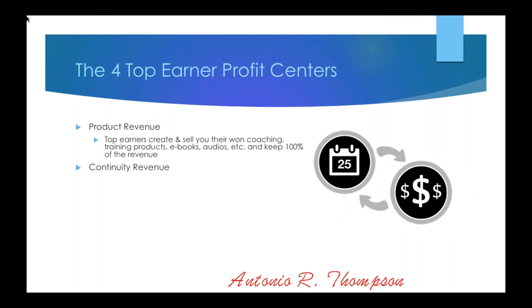The second profit center is continuity revenue — anything that pays you each and every month like clockwork. A good example would be MLSP itself. When you decide to join MLSP Mastery tonight and become an affiliate with just a couple clicks of a button, at no additional cost, MLSP pays you $100 per month per member that you refer to the MLSP Mastery program. For me in my particular network marketing company, I have to go through a lot of people to get to $100 a month — so this is significant.